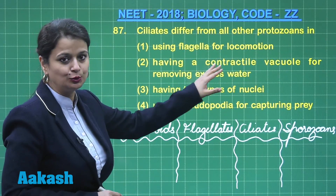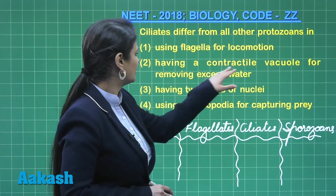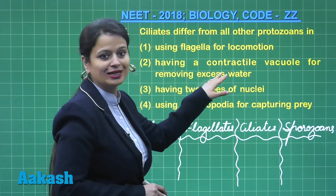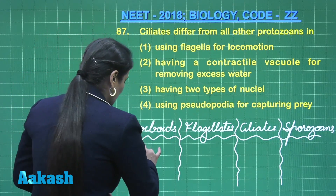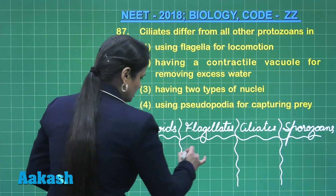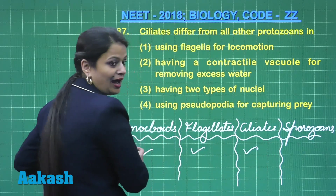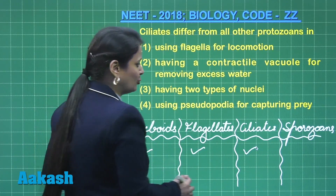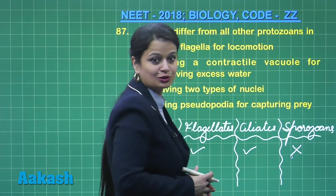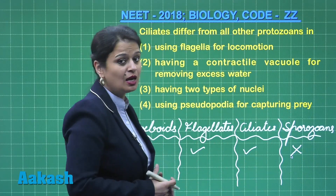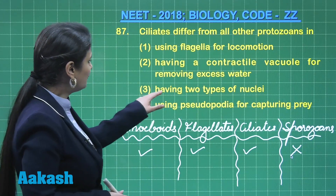They use cilia. Regarding having a contractile vacuole for removing excess water: amoeboids, flagellates, and ciliates can all have a contractile vacuole, but in sporozoans the contractile vacuole is totally absent because they are all endoparasites.